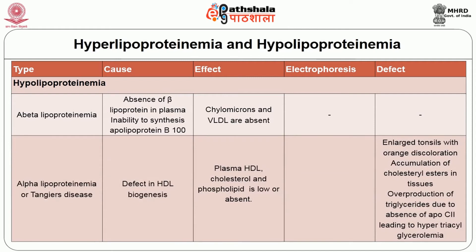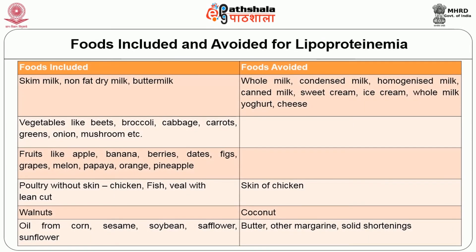Regarding hypolipoproteinemia, the first type is A-beta lipoproteinemia, due to the absence of beta lipoprotein in plasma and inability to synthesize apolipoprotein B100, so chylomicrons and VLDL are absent. The next is alpha lipoproteinemia or Tangier's disease, caused by a defect in HDL biogenesis. Plasma HDL, cholesterol and phospholipid are either low or absent, with enlarged tonsils with orange discoloration, accumulation of cholesterol esters in tissues, and overproduction of triglycerides due to absence of ApoC2 leading to hyper-triacylglycerolemia.